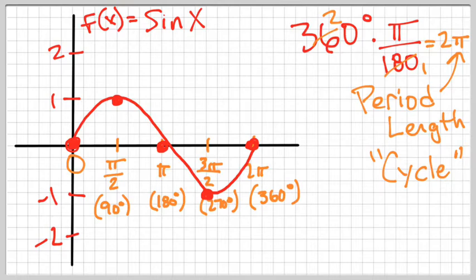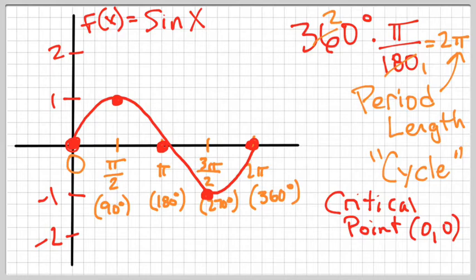So something to write down. The critical point, or the starting place of this graph, is at 0, 0. So that's the critical point, 0, 0. And that is what one cycle of sine does.